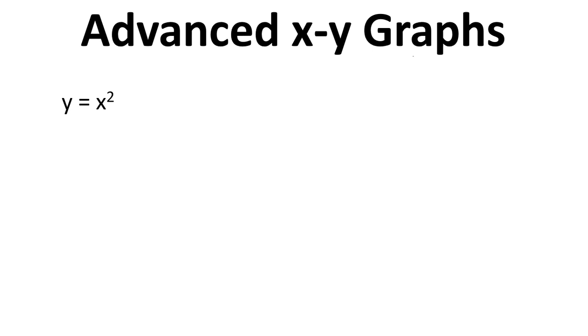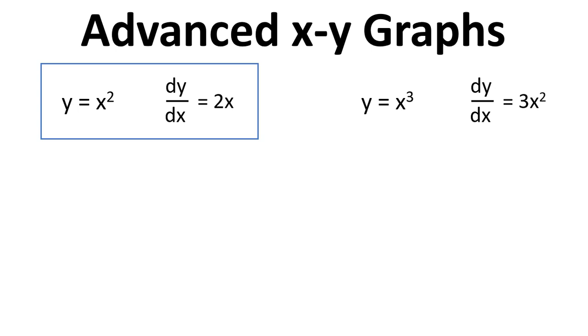So we've seen that for y equals x squared, when we want to get the gradient, it's dy by dx equals two x. When we looked at y equals x cubed, dy by dx equals three x squared. If we'd done x to the four, we'd see that dy by dx was four x cubed.